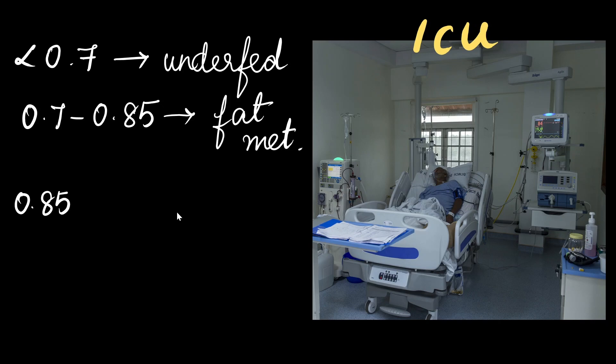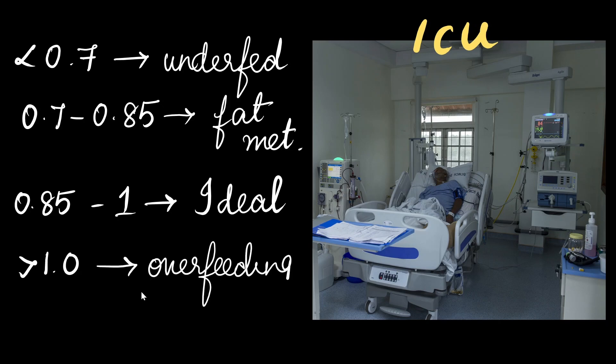If the values are between 0.85 to 1, it's ideal. So, it indicates the body is using a mixed fuel or the patient is at least consuming a balanced diet. If the value goes beyond 1, it means the patient is being overfed. And that too, the overfeeding is especially with respect to carbs.